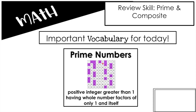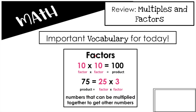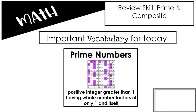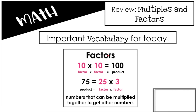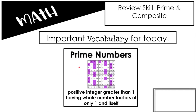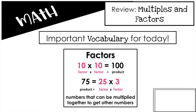It's only itself times one that will get you that number — that's the only possible way to get it. Now I want to make sure I brought back this word because in both definitions you're going to find the word factors. That's why we did the factors and multiples the day before — a factor is a number that you multiply together to get a product. We are now just using that knowledge and carrying it over into this concept.